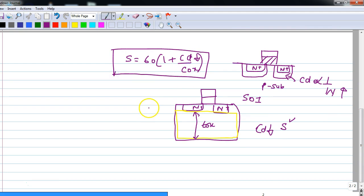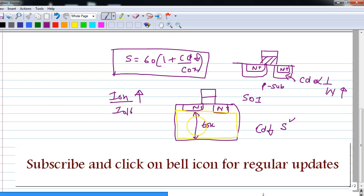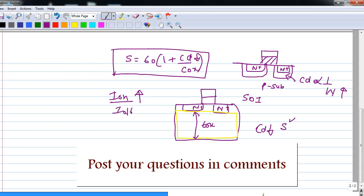So remember that sub-threshold slope is given by this formula. And as you go to lower technologies, the sub-threshold slope will actually give you more off current. And the parameter which is important is Ion by Ioff. And we want this to be of a very high value. And to increase this value, we need to reduce Cd. And that can be done by increasing the width of the depletion layer.